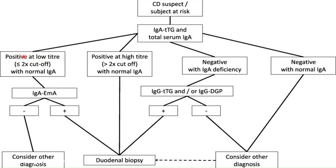In the first scenario, where IgA TTG level is positive but less than two times the cutoff value with normal IgA level, then perform IgA anti-endomysial antibodies. If these are negative, consider other diagnoses. If they are positive, go for duodenal biopsy.